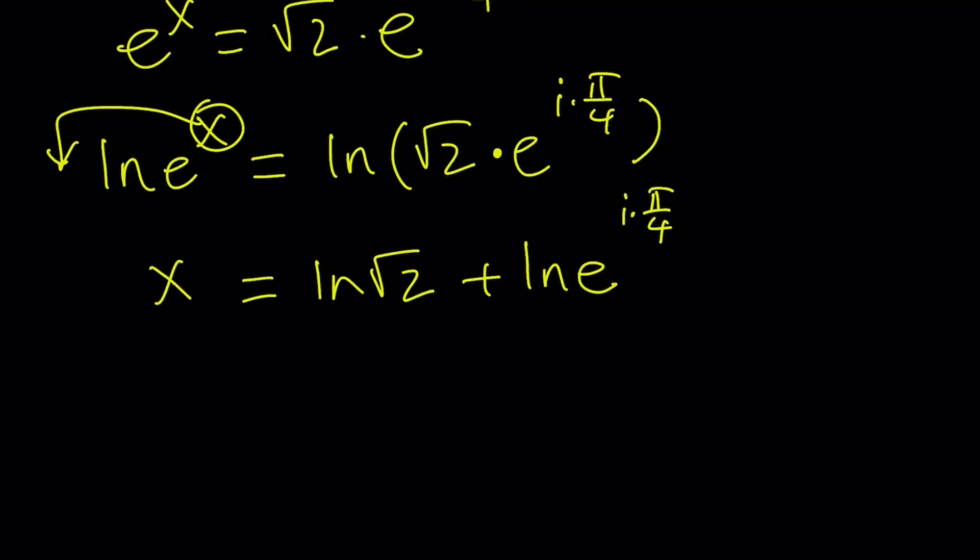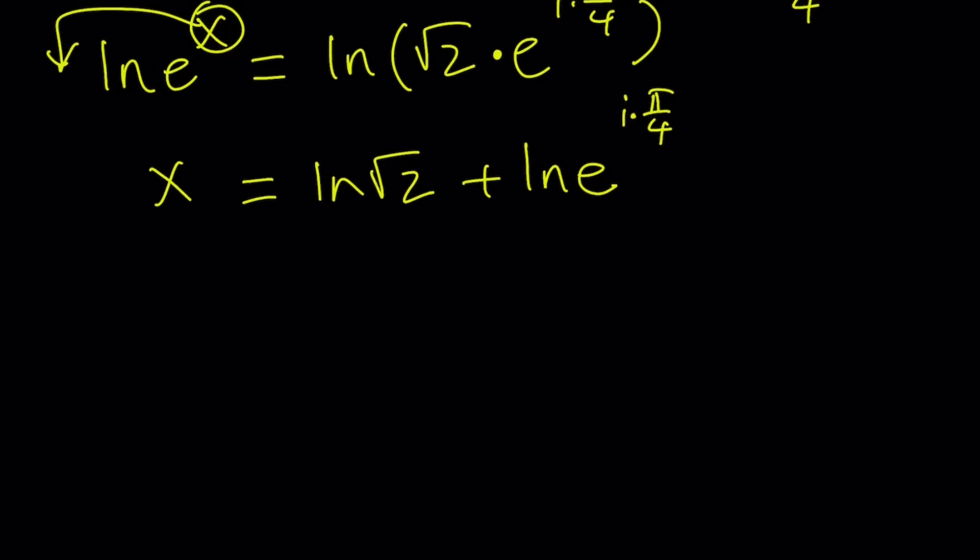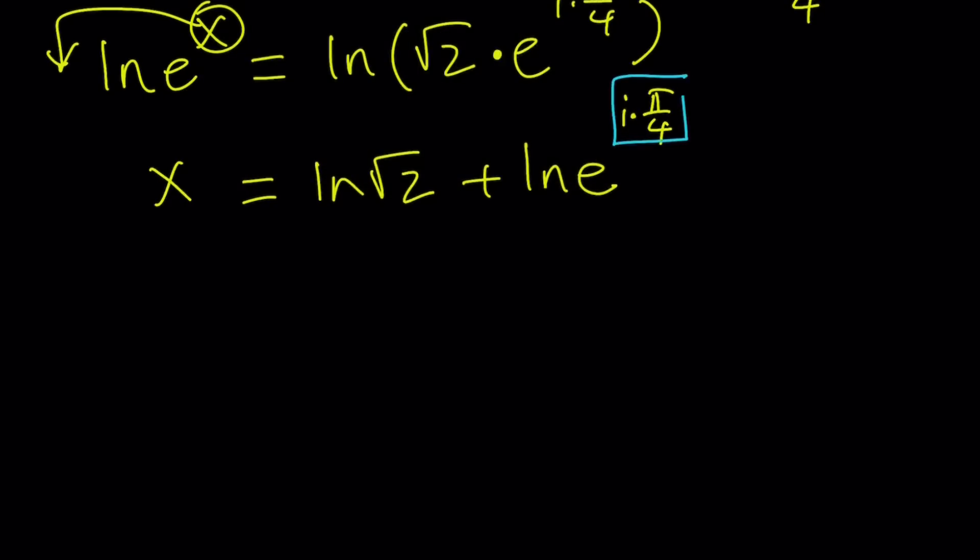So we can write this as ln square root of 2 plus ln e to the power i times pi over 4. You don't have to write it with a dot like you could just write i pi over 4 but I want to emphasize that i is being multiplied by the angle. We have the exponent now and we can move it to the front. ln e is just going to be 1. So x can be written as ln square root of 2 plus i times pi over 4.